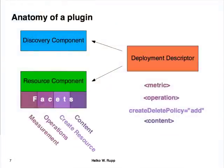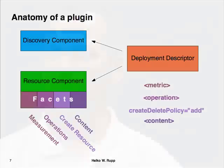The last part of a plugin is the plugin descriptor. This basically wires the classes together and defines the metadata for the system so that it knows what we want to monitor. The facets and the metadata go hand in hand. For measurement, we have the metric tag in the deployment descriptor; for the operations facet, the operations tag, and so on.